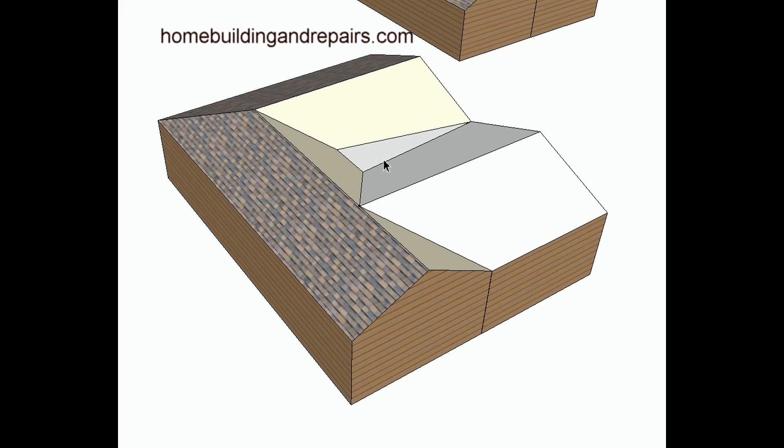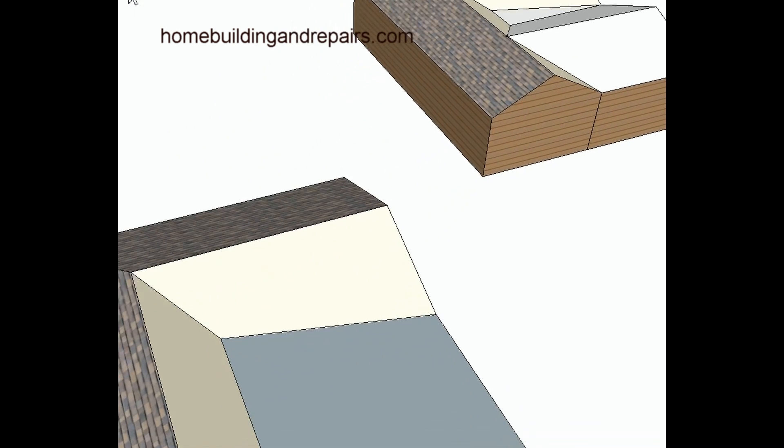Of course there are other ways. I actually lived in a house where both of the gables came down like this, and they just had a piece of sheet metal that was about three foot wide and they kind of formed it into this area and that drained the water off. So there are other options for that also.